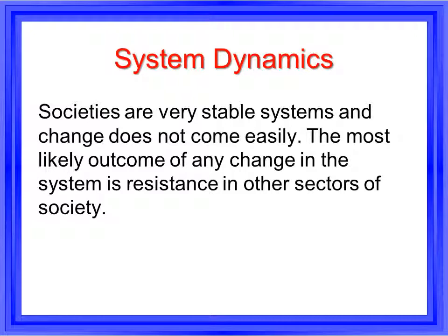Societies are very stable systems and change does not come easily. System-maintaining negative feedback is capable of deflecting, dampening, or extinguishing most system change. The result of negative feedback is either the extinction of the innovation or slight compensatory changes that preserve the fundamental character of the whole system. But there are times when change is rapid and fundamental — revolutionary in character. In general, sociocultural change that releases more energies from the environment or that enhances the power and authority of a society's elite is likely to be swiftly adapted.